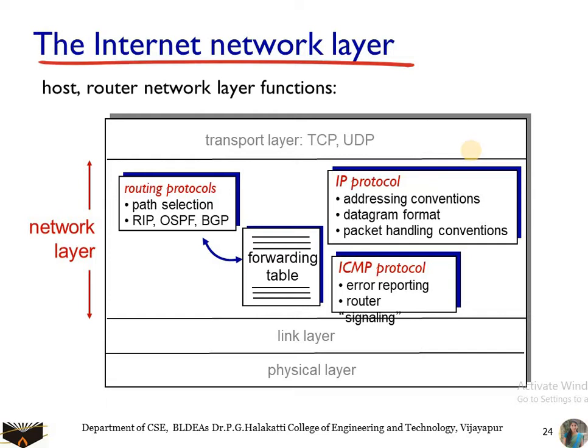The second major component is the routing component. This routing component finds the path a datagram follows from source to destination. We have routing protocols that compute the forwarding table, forwarding packets through the network. The last component facilitates and reports errors in the datagram and responds to requests for certain network layer information. These three are the major components of the internet network layer.